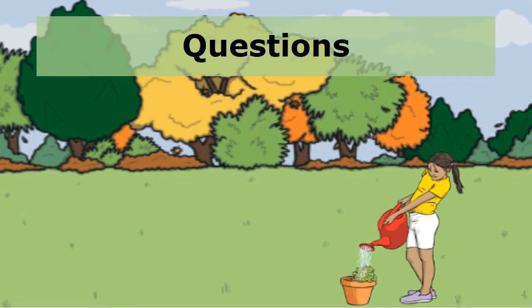Now listen as the questions are read. Question 1. Plants that need water sometimes bend or droop. What is a word that means the same as droop in the sentence? A. Upright. B. Sideways. C. Bow. Or D. Sway.